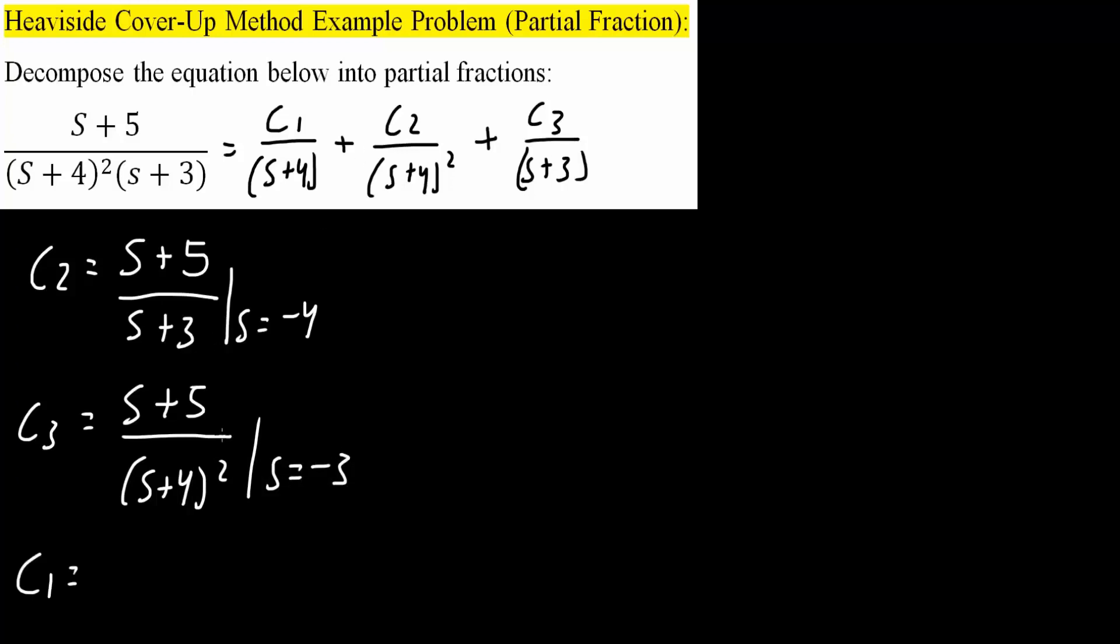And now, we will solve C1. Now, C1 is a bit different, because this problem involves repeated roots, and in order to solve for C1, we will take the derivative. So d over ds of—so the numerator here is s plus 5, that's the same, and here, instead, I will put s plus 3. And ultimately, I will plug in s is equal to negative 4. I'm plugging negative 4 because I want this term to be zero.